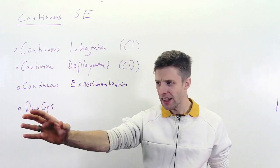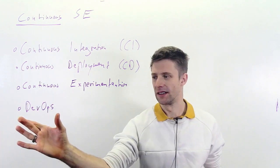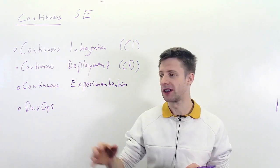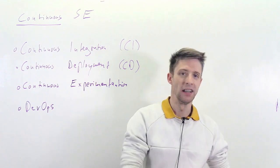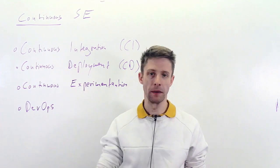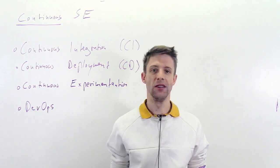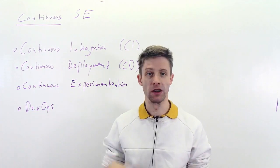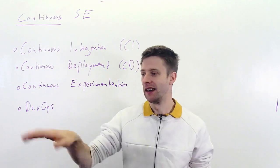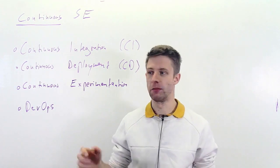And then DevOps is sort of a combination of development and operation because in the good old times, we would develop the software, hand it over and someone else, some other teams or other company would operate it. And the idea here is to make this a continuous loop that the team that develops also operates, runs the software, gets feedback and continuously evolves the software basically.